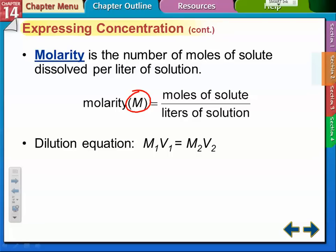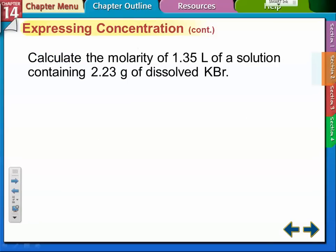Normally we want to dilute something. You have a concentrated amount of something and you want to get a certain molarity at a certain volume. Calculate the molarity of 1.35 liters of the solution containing 2.23 grams dissolved potassium bromide. First we figure out how many moles of potassium bromide by taking 22.3 divided by the molar mass of KBr, which is 39.1 for potassium and 79.9 for bromine.